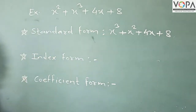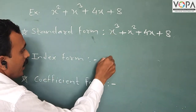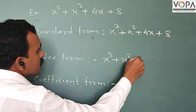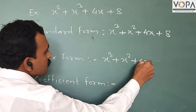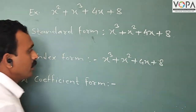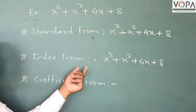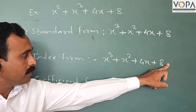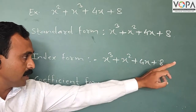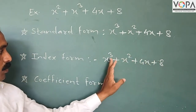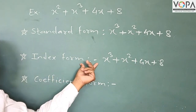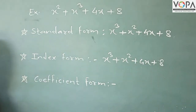The index form of that example is x³ plus x² plus 4x plus 8, where the indices are 3, 2, 1, and 0 — continuing in order 3, 2, 1, 0. This is called the index form of that polynomial.